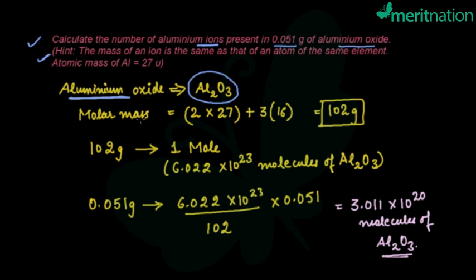So molar mass of aluminum oxide—first of all we need to calculate that. It is 2 times 27 (27 is the molar mass of aluminum) plus 3 times 16 (16 is the molar mass of oxygen). So the total molar mass of aluminum oxide will come out to be 102 grams.